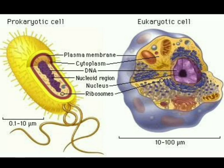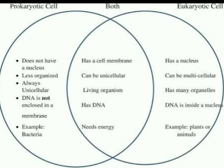According to the diagram, prokaryotic cells are smaller in size, therefore it is always unicellular, whereas eukaryotic cell is larger in size but it can be either unicellular or multicellular. In prokaryotic cell, nucleus is not present but nucleoid is present, and in eukaryotic cell, a true — fully developed — nucleus is present.